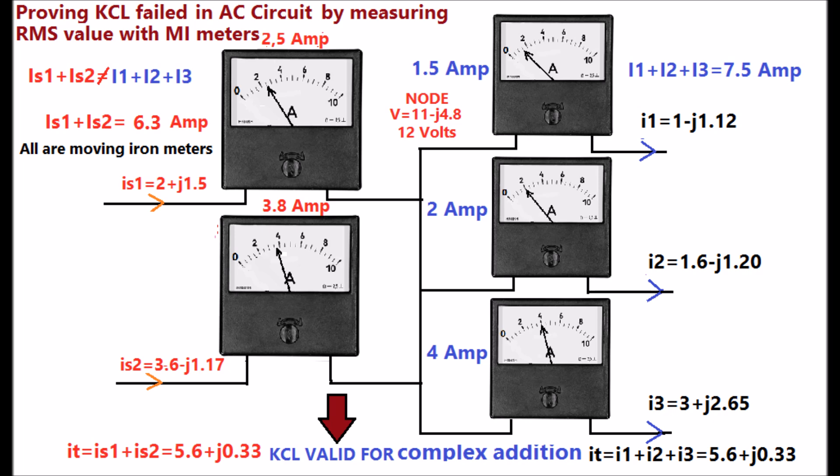KCL is valid for complex addition only, as shown in the display. The RMS value of incident currents are added, which is equal to 6.3A, whereas the RMS value of I1, I2, I3 added equal to 7.5A.